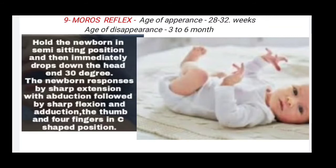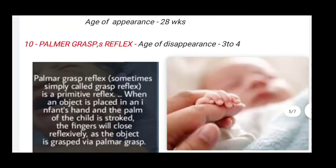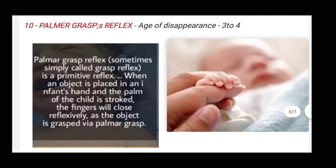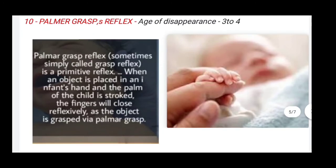Next is the palmar grasp reflex, also simply called the grasp reflex. Age of appearance is 28 weeks and age of disappearance is three to four months. It is a primitive reflex where when an object is placed in an infant's hand and the palm of the child is stroked, the fingers will close reflexively as the object is grasped via palmar grasp. In this image you can see an example of the palmar grasp reflex.